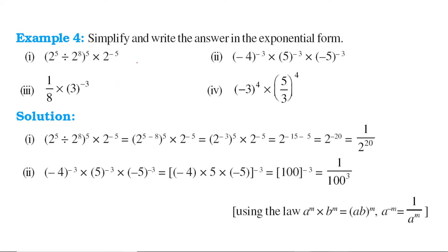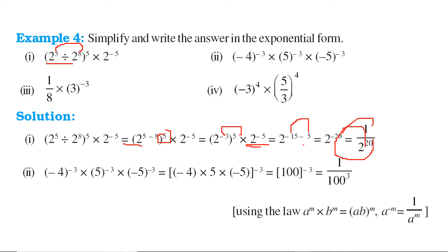We have to simplify and write the answer in exponential form. This is 2 to the power 5 divided by 2 to the power 8, so 5 minus 8 gives 2 to the power minus 3. Then we apply the power again: 2 to the power minus 3 to the power 5 is 2 to the power minus 15. Then we multiply by 2 to the power minus 5, so minus 15 plus minus 5 is minus 20, giving 2 to the power minus 20, which equals 1 by 2 to the power 20. We take the reciprocal to make the power positive.